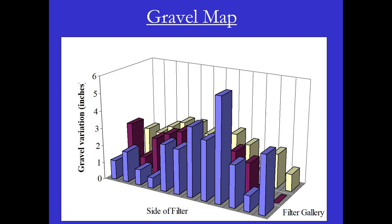Here's a gravel map. It shows that the gravel in this filter is not that even — there is a difference of about five inches. It's not too bad, but it does show that there's an unevenness of the gravel.